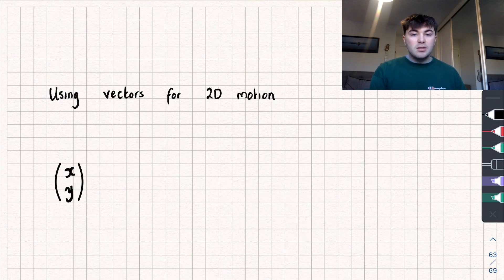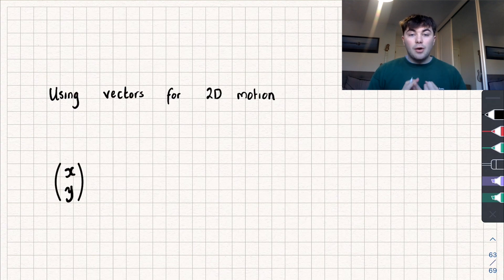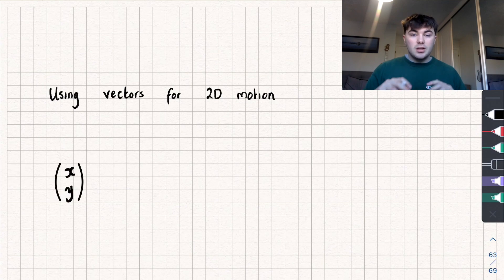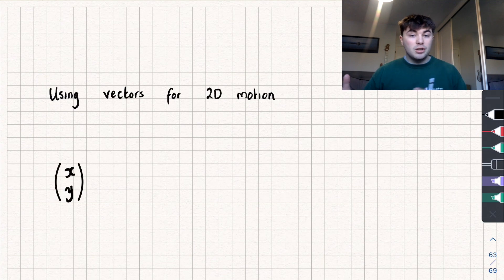In this video we're going to be taking a look at using vectors to help us describe 2D motion. I'm going to assume that you're already familiar with the constant acceleration equations, or the SUVAT equations, as well as using calculus to find displacement, velocity, and acceleration. If you're unsure on those, I'll link my videos in the description, as well as a link to my playlist on A-level mechanics. I'm going to timestamp the different parts of the video, so if you just want to see a SUVAT equation question, you can skip through to that.